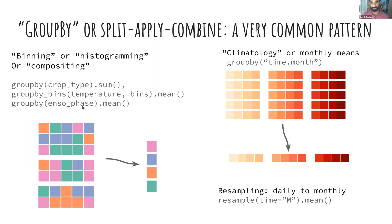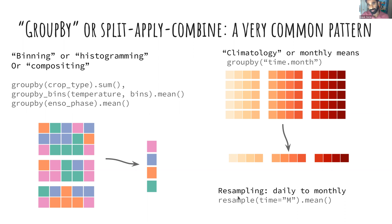In climate science, you also group by ENSO phase to get composites for El Niño and La Niña years. Another common version is climatologies — group by time dot month — where you take all the Januaries and average them together. Another common group-by problem is resampling or regridding: going from daily sample data to monthly. In xarray and pandas, this is actually implemented as a group-by operation under the hood.